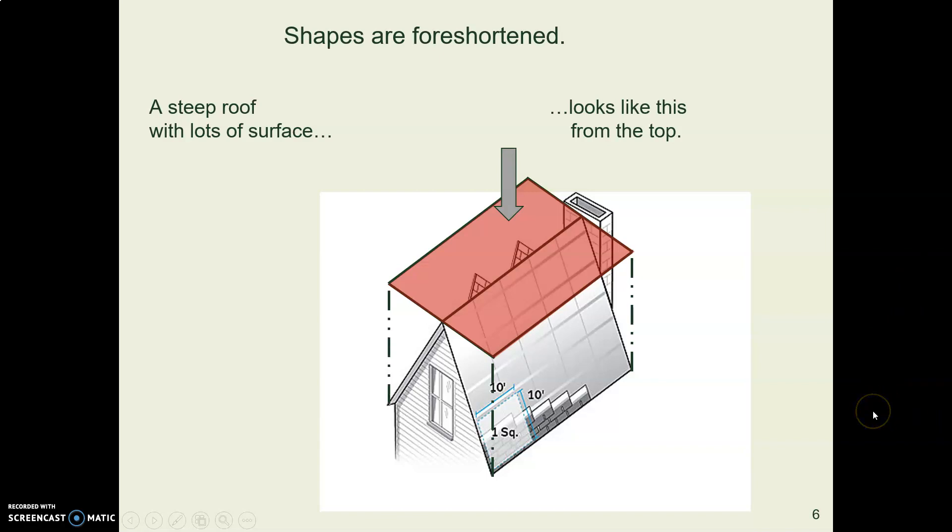This is also important if you do something like rainwater harvesting and you need to think about how many square feet of roof area do you have for catching rainwater. In that case you think about this reddish foreshortened rectangle, that's your roof area, unlike the slopey part that you use when you're ordering your roofing material.